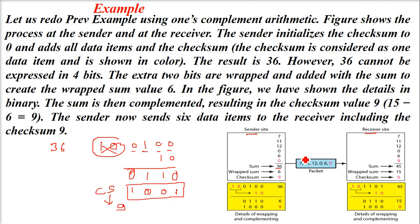For the checksum, we change it to the complement: 0 to 1, 1 to 0, 1 to 0, 0 to 1. Now this is our checksum, which is 9. These two extra bits were wrapped around and summed with this one, giving us 6. The sum is then complemented, giving us 9, which is 15 minus 6 in binary.